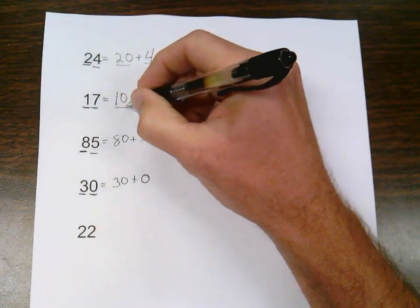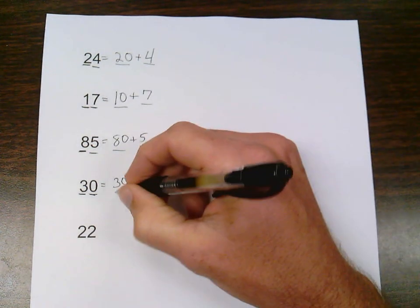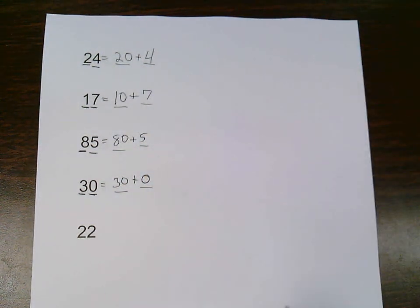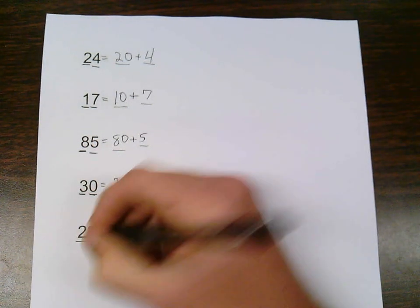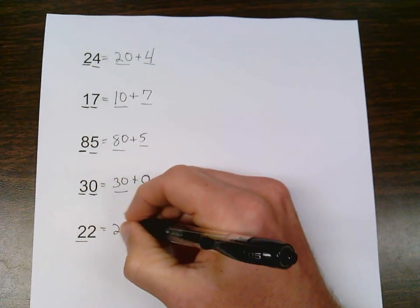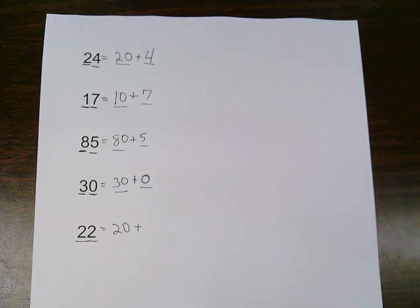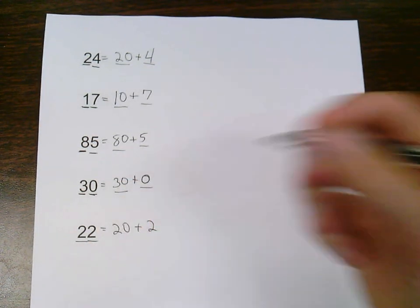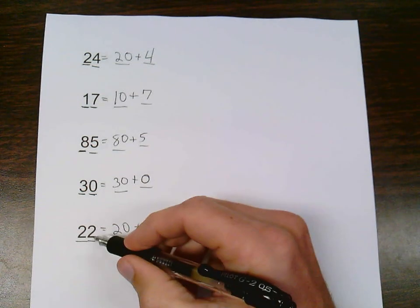If I start with 2 digits in my standard form number, I want my pattern in my expanded form number to go 2 digits, then 1 digit — consistently across all examples. And my last one, 22. When I expand that, the 2 in the tens place is worth 20, and I add it to the 2 in the ones place, which is worth 2. So 22 in its expanded form is 20 plus 2. And they are both equal — 22 equals 20 plus 2, because 20 plus 2 equals 22.